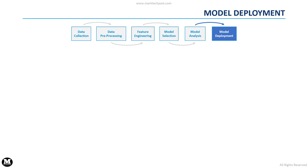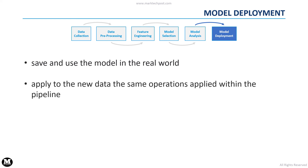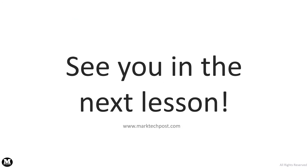The last step of the machine learning pipeline is model deployment. Here we have to train the most suitable model on the whole dataset, and then we can use it in a real-world scenario. Every preprocessing operation and the feature extraction we have applied to the training data must also be applied to the data we will use to obtain new predictions in the real world. So, we have arrived at the end of this lesson. See you in the last session of this course, where we will see how to develop our first machine learning pipeline to build a model that predicts the age of a person based on his or her voice.